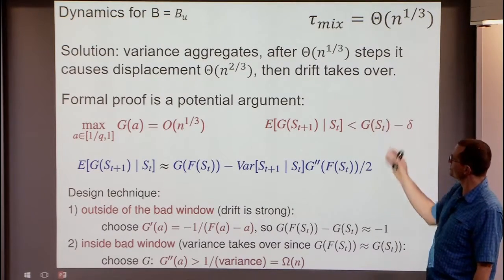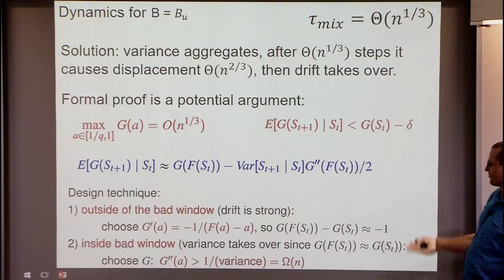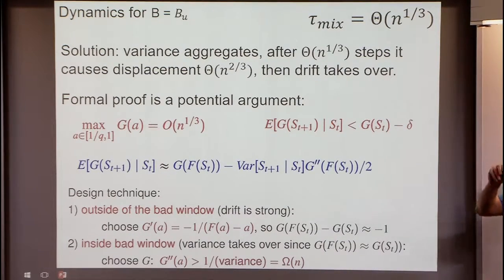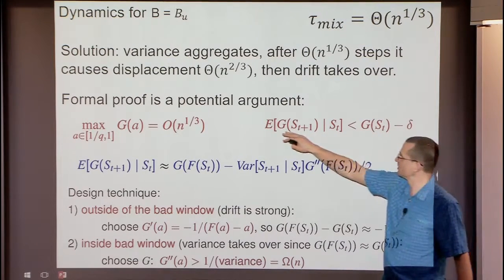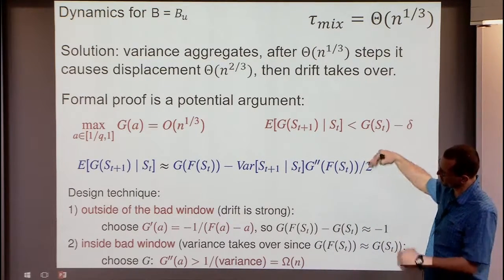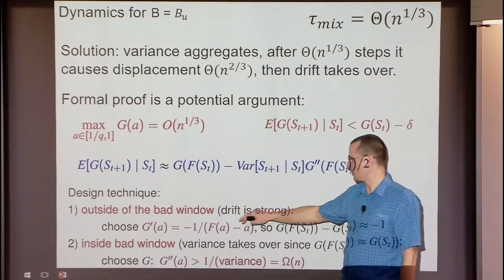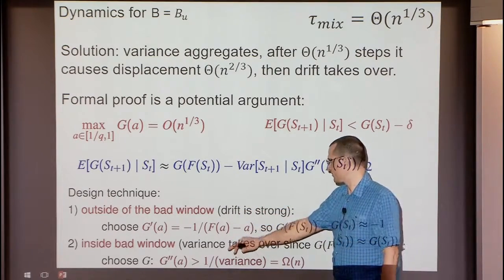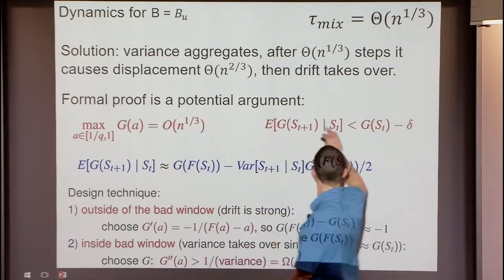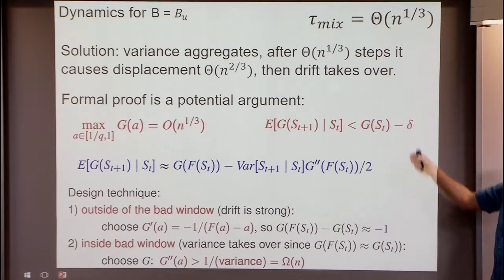The potential function has a large second derivative in the critical window, and that second derivative ensures the potential decreases in expectation due to variance in that window. Outside the window the function value also decreases in expectation due to drift.